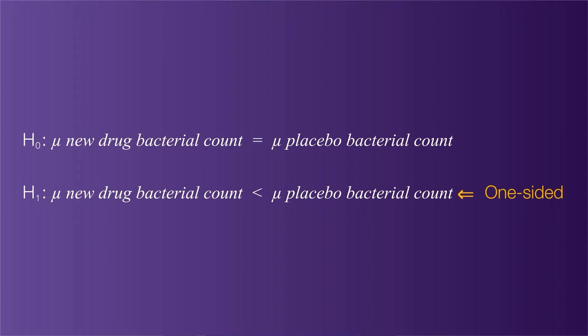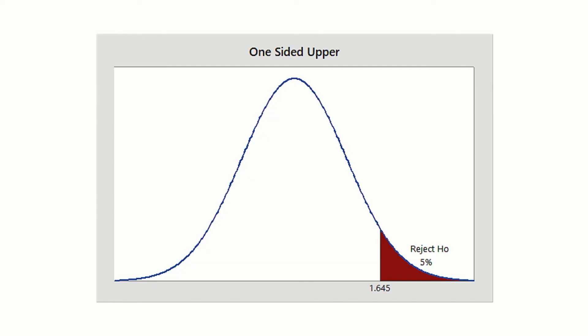With the one-sided test, we reject the null hypothesis when we see an extreme result in only one of the tails. Since there is only one tail, we can put all 5% of the error in that one tail.